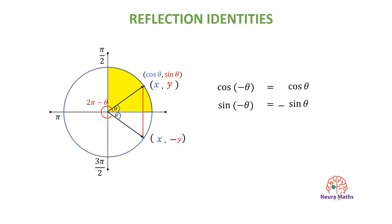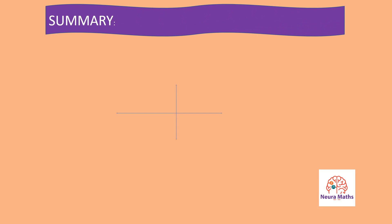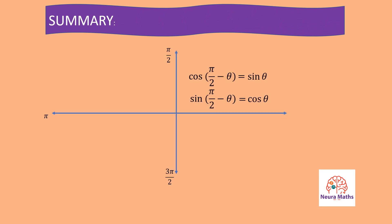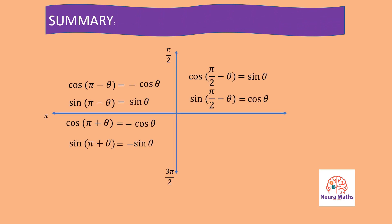To sum up, there is no need to memorize all these identities. Every trig function that has an argument of pi plus or minus theta equals the same function but with the sign determined by the quadrant. For example, cosine of pi minus theta equals cosine of theta, but cosine is negative in the second quadrant, so it becomes negative cosine of theta.